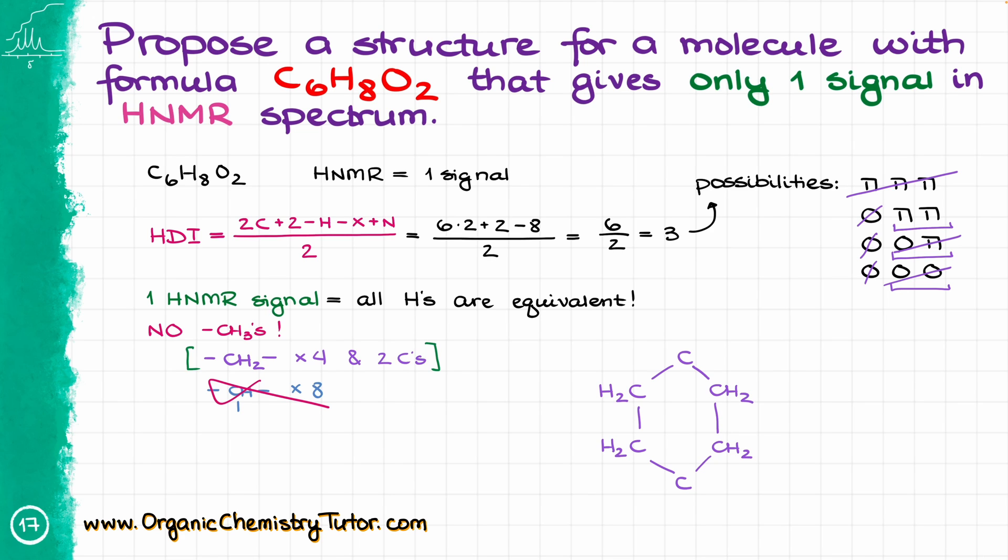But I also have two extra oxygens that I still haven't accounted for, and I have two carbons which do not have anything sitting on them. So if I add an oxygen on a double bond to one carbon, and an oxygen on a double bond to another carbon, I have my molecule. So our final structure is cyclohexane-1,4-dione.